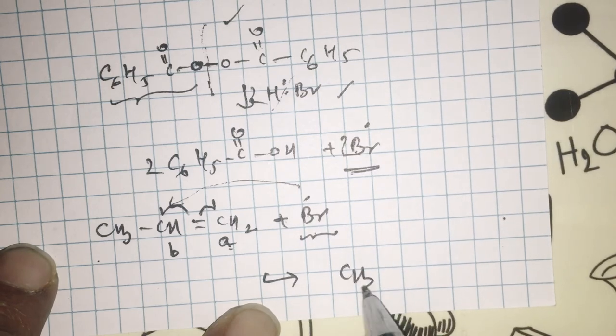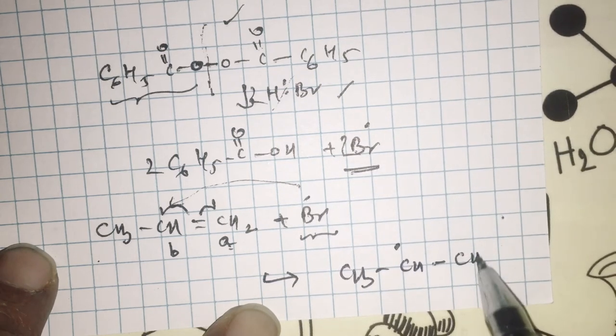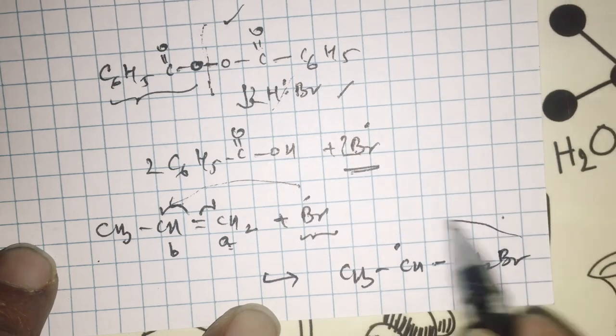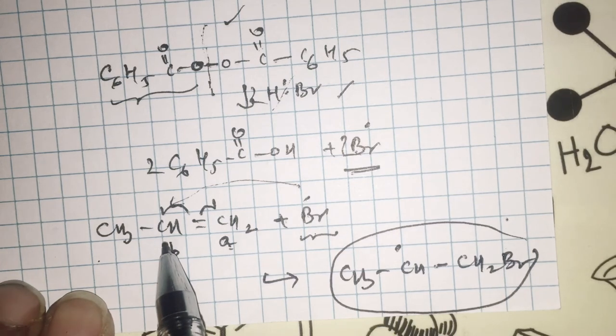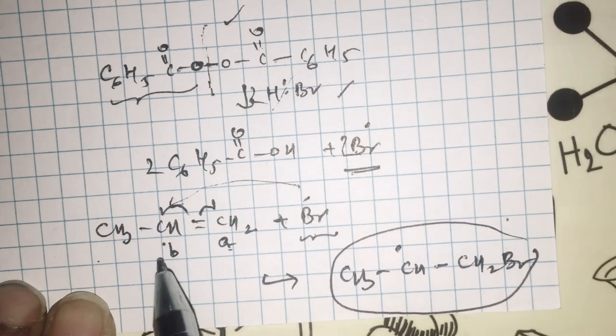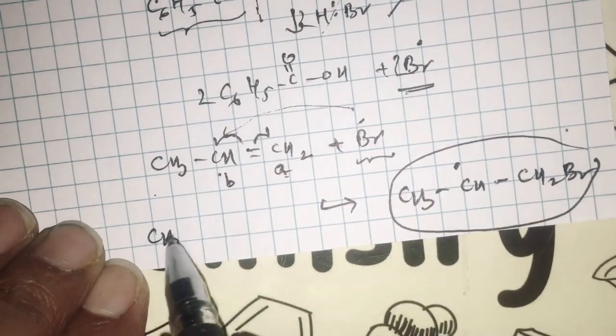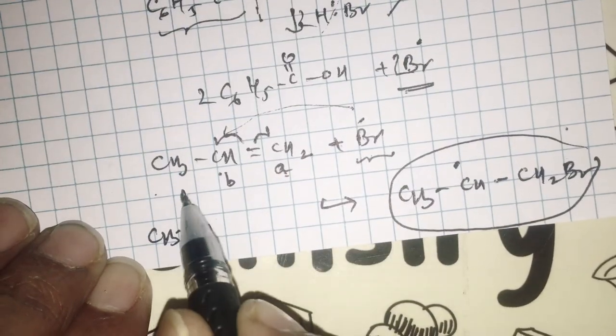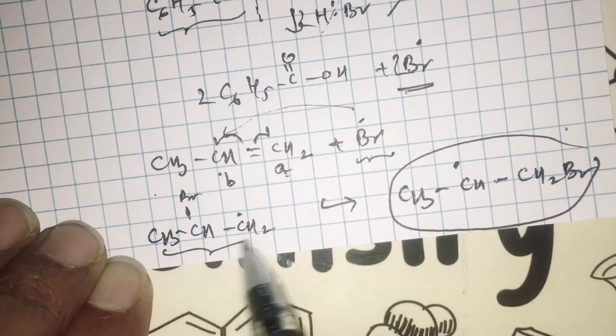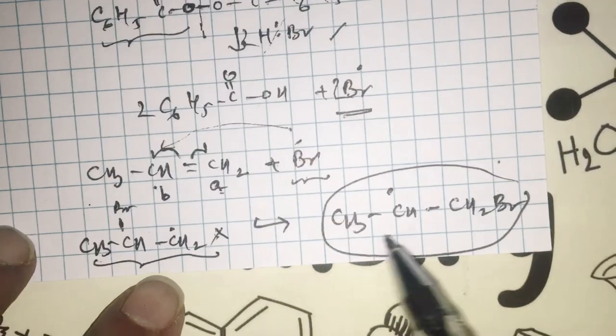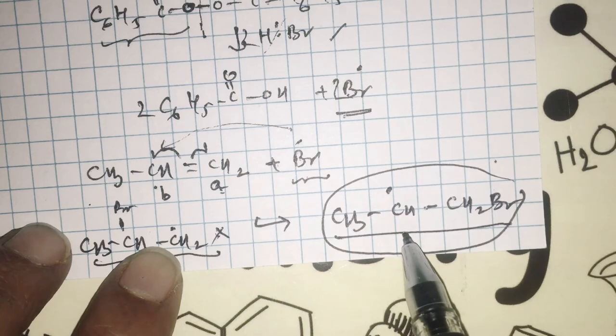The second most important reason is, if this Br combines with A through homolytic fission of the pi bond, you are getting here a very stable secondary free radical. If Br combines with B carbon with all the difficulty of traveling inside, you are getting a primary free radical, which is not really stable when compared with secondary free radical. Its formation is favorable due to steric reasons and stability.